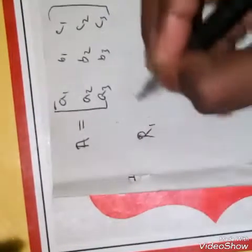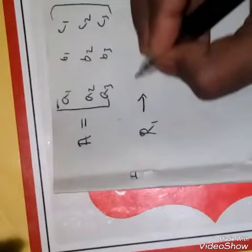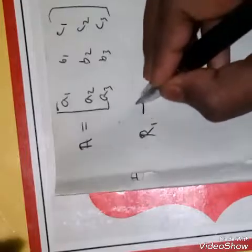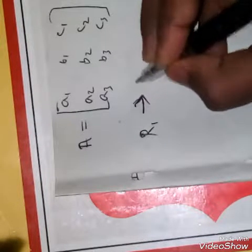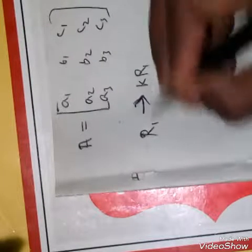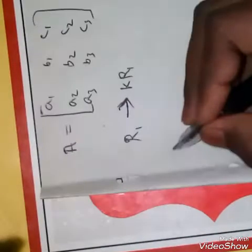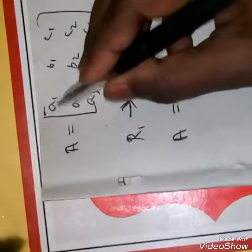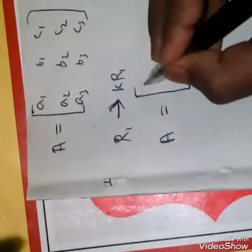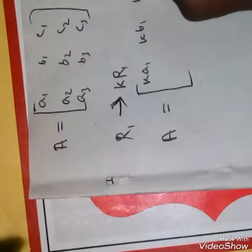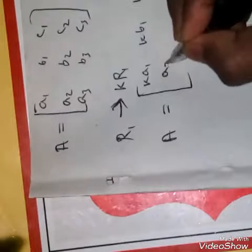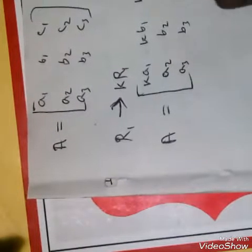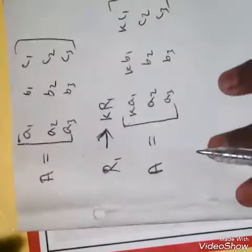Let's multiply a constant k along row one. We write this with a single arrow: R1 → k·R1. In the case of interchange we use a double arrow, but for multiplication we use a single arrow. The result is: the first row becomes [k·a1, k·b1, k·c1], while the other elements remain unchanged: a2 b2 c2 and a3 b3 c3.